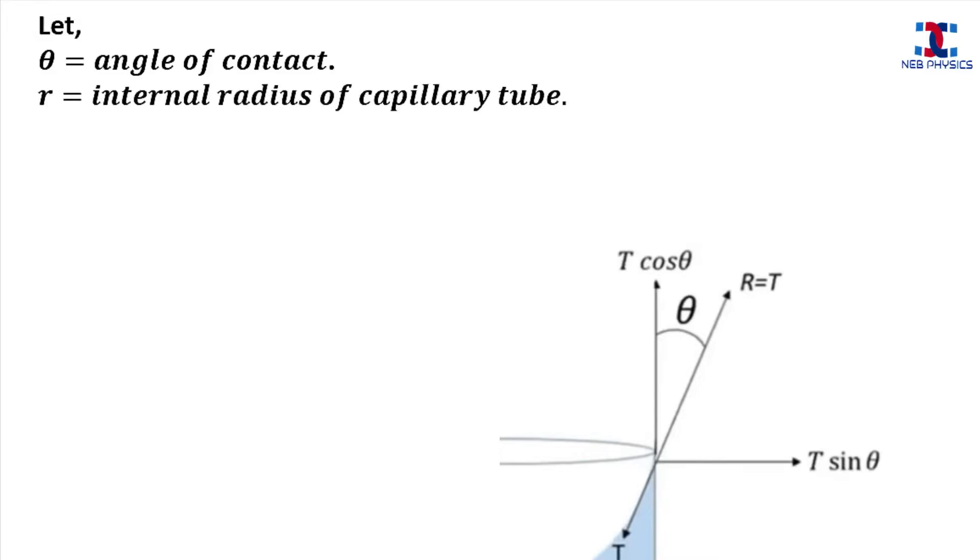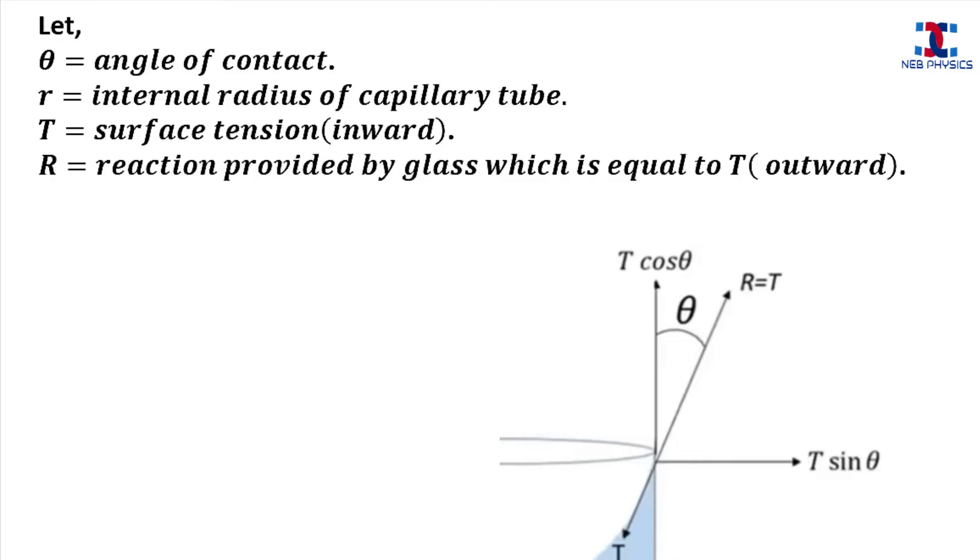Let r be the internal radius of capillary tube. T is the surface tension. Capital R is the reaction provided by glass which is equal to the surface tension. H is the height of liquid column inside the capillary tube.